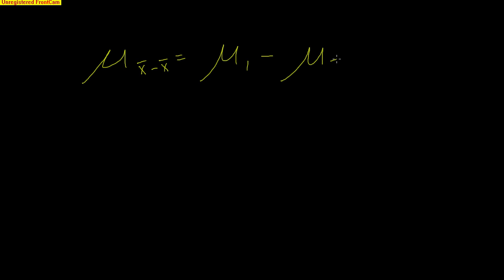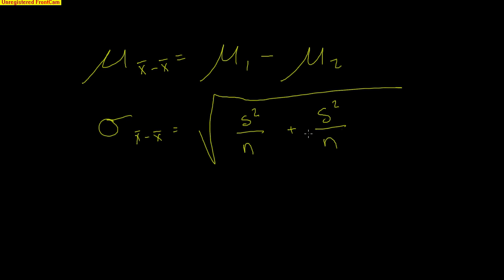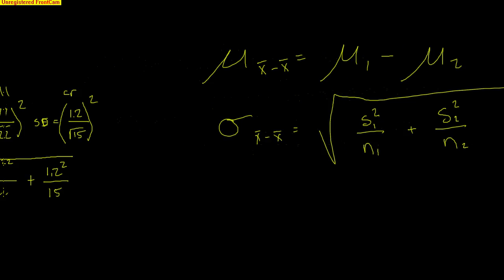To summarize: to find the expected difference, you just take the difference of sample 1 minus sample 2. To get the standard deviation of your differences, you take a giant square root of (standard deviation₁² / n₁) plus (standard deviation₂² / n₂). We use subscripts 1 and 2 — or in this case A and C for alligators and crocodiles — to represent which sample each value came from.